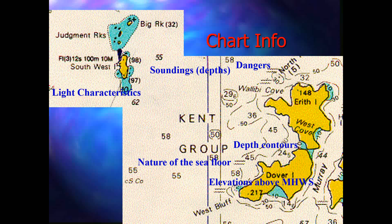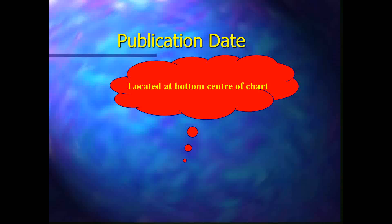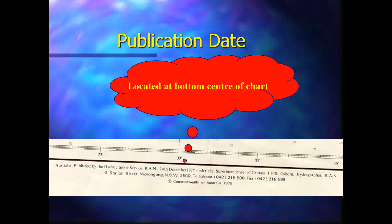The publication date of the chart is located at the bottom center of the chart. The publication date provides detailed information — for example, this chart was published in Australia by the Hydrographic Service of the Royal Australian Navy on 24th December 1975 — and all the detailed information required is provided there.